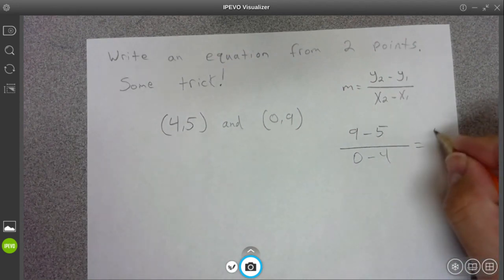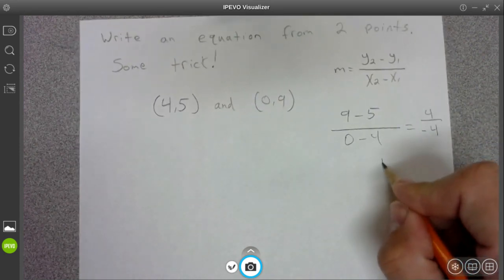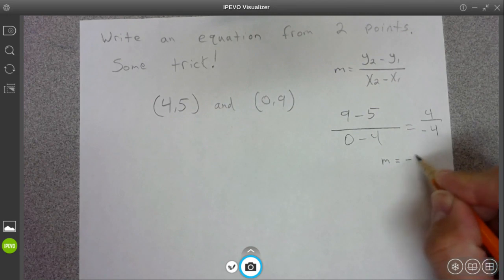Alright, 9 minus 5 is equal to 4, 0 minus 4 is equal to negative 4, and so our slope, our m, is equal to negative 1.